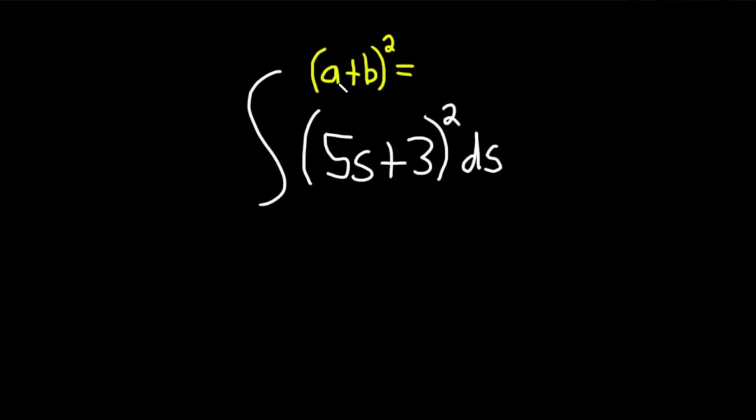Basically you can think of a as your first piece and b as your second piece. So you square the first one, you put a plus sign, and then you multiply these so a b and then you double it so 2ab, and then you square the last so b squared.